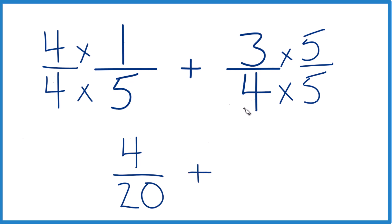On this side, we have 3 times 5 is 15, and 4 times 5, that's 20. So now we have the same denominators here.